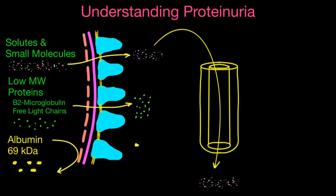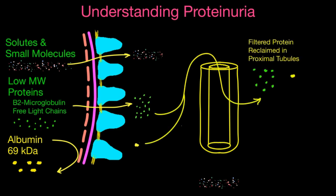Looking at all the things that get filtered: solutes and small molecules pass through the tubules, most undergo reabsorption, some undergo selective secretion, and many small molecules and solutes end up in the urine in the final composition. Low molecular weight proteins get filtered and a tiny amount of albumin may get filtered as well. In the proximal tubule, filtered protein gets reabsorbed and reclaimed — nearly all of the low molecular weight proteins and the albumin will be reabsorbed.